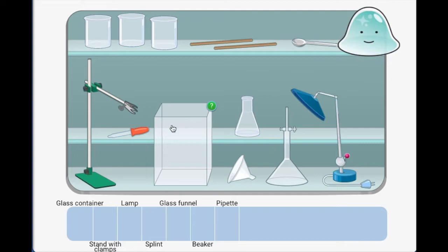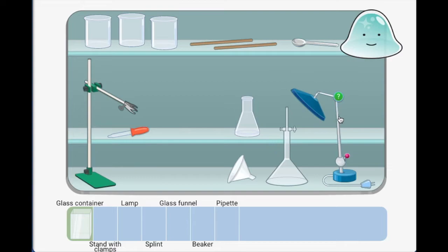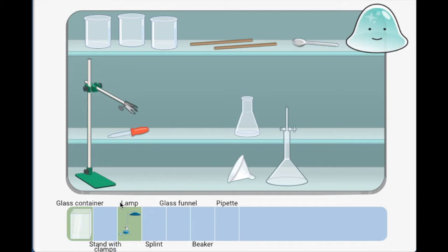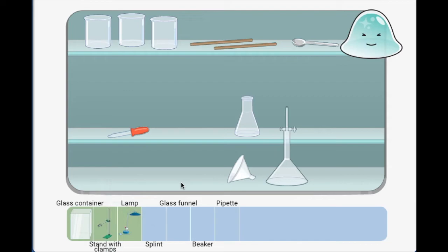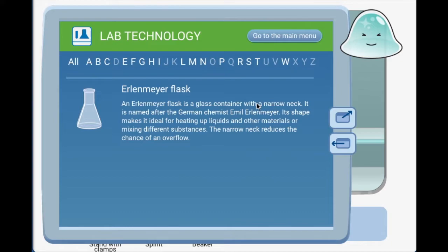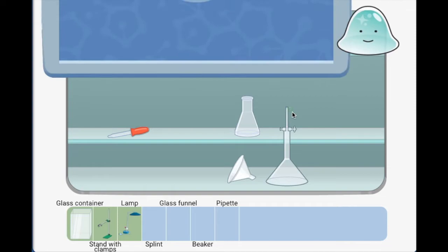So this is a glass container. We have to select it. And lamp - everyone knows that this is a lamp. And stand with clamp. This is a stand with clamp. And where is glass funnel? This is a glass funnel. If you want to check it out - this is not an Erlenmeyer flask, it's a glass funnel. Yes, this is a glass funnel.